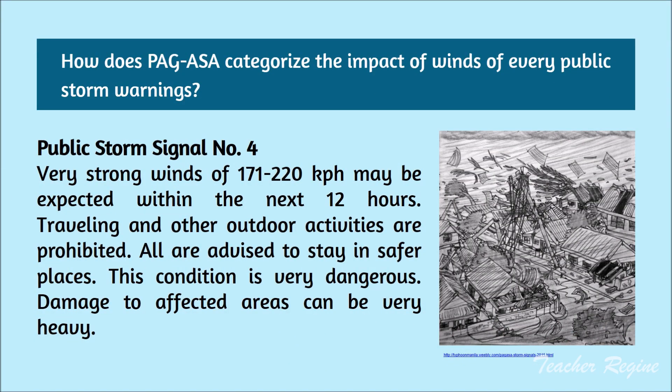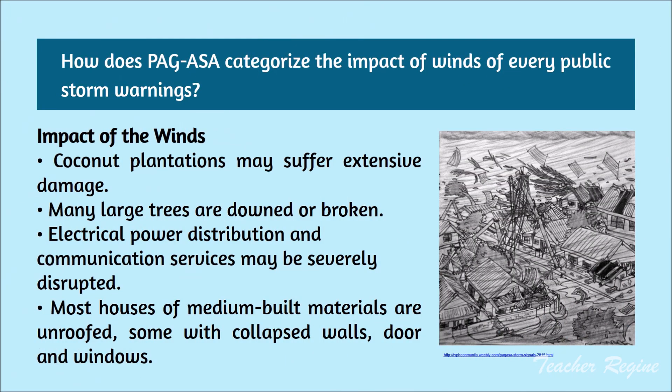Public Storm Signal Number 4: very strong winds of 171 to 220 kilometers per hour may be expected within the next 12 hours. Traveling and other outdoor activities are prohibited. All are advised to stay in safer places. This condition is very dangerous and damage to affected areas can be very heavy. Coconut plantations may suffer extensive damage. Many large trees are downed or broken. Electrical power distribution and communication services may be severely disrupted. Most houses of medium-built materials are unroofed, some with collapsed walls, doors, and windows.